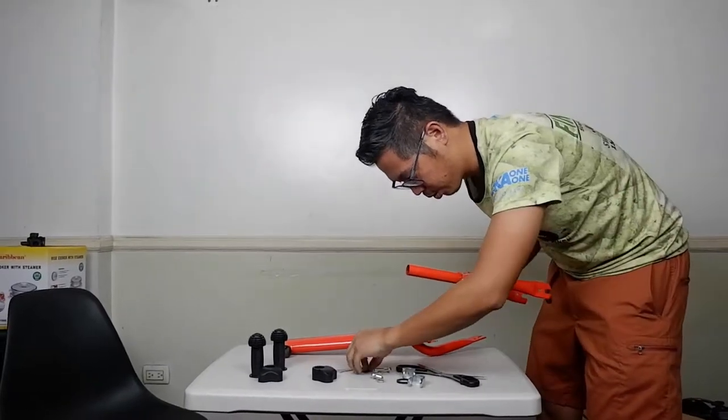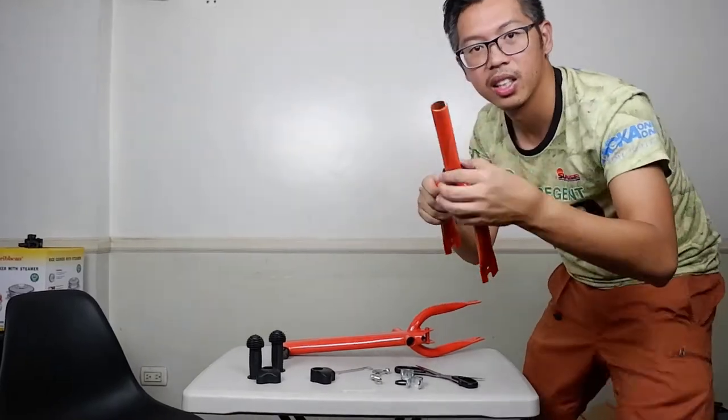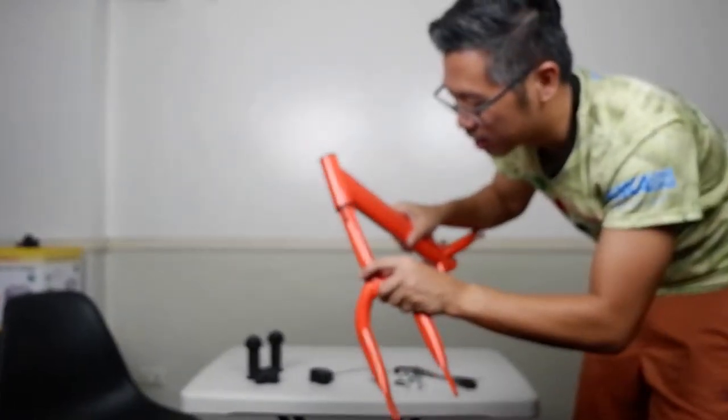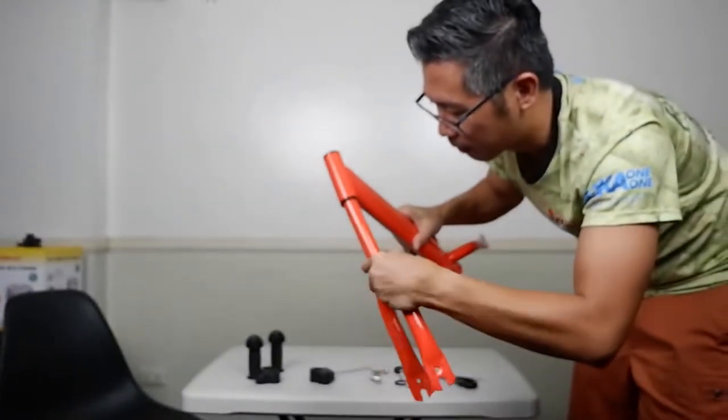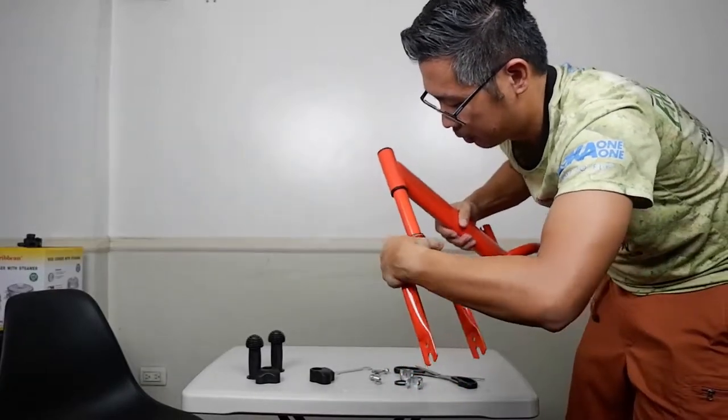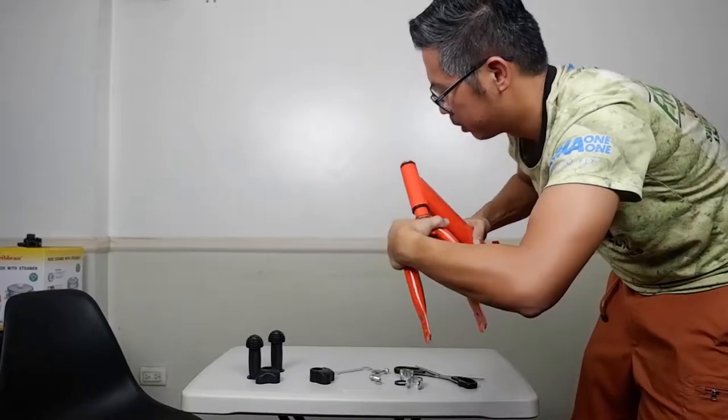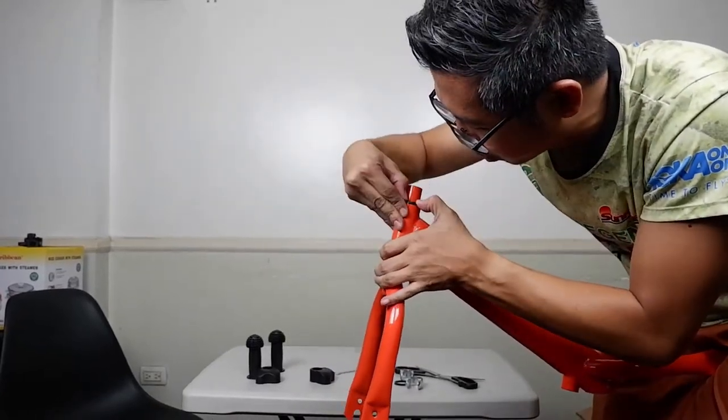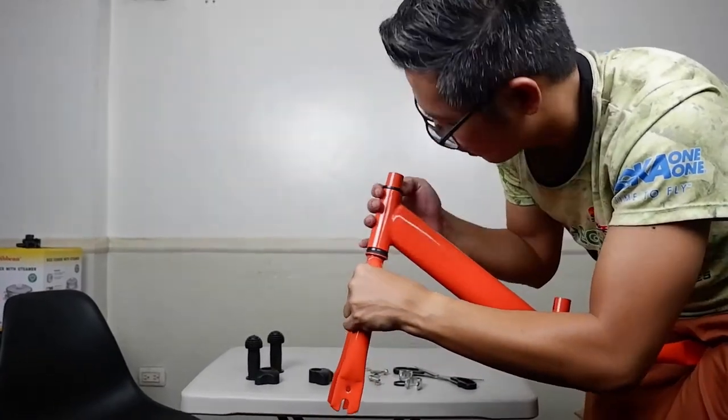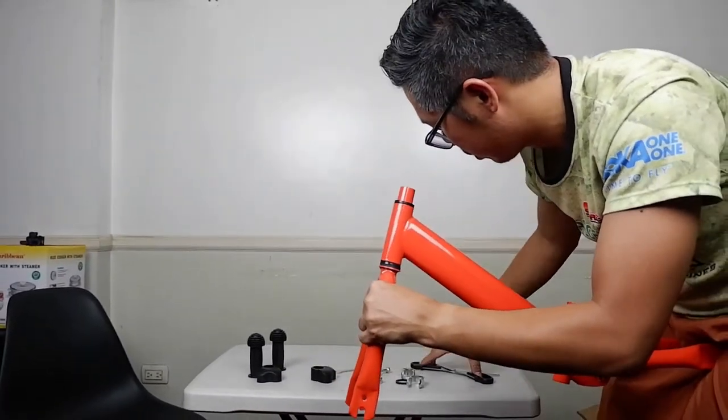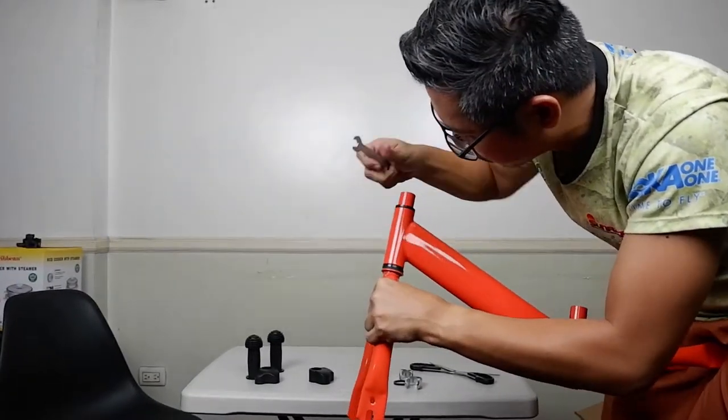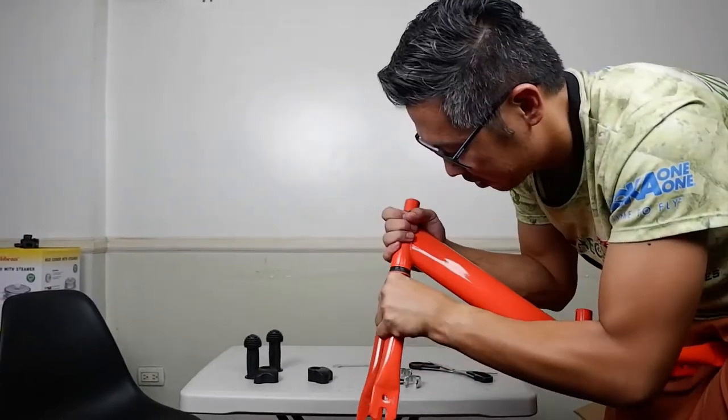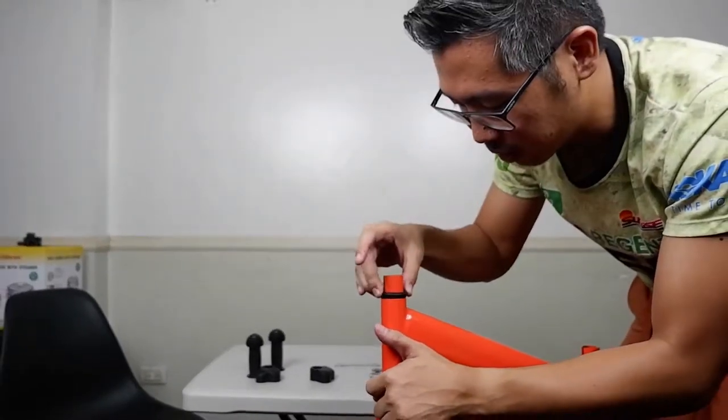Put the first O-ring at the fork inside and put the fork inside gently. There. Sometimes the headset goes out, you just need to push it again. There. Then put the second O-ring in here.